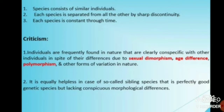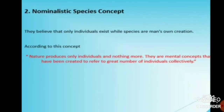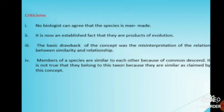The typological concept is equally helpless in the case of so-called sibling species — perfectly good genetic species but lacking conspicuous morphological differences. Nominalistic species concept: this concept holds that only individuals exist, while species are man's own creation. Nature produces only individuals and nothing more. Species are a mental concept created to refer to a large number of collected individuals. Criticism: no biologist can agree that species is man-made. It is now an established fact that they are products of evolution. The basic drawback of this concept was the misinterpretation of the relation between similarity and relationship. Members of a species are similar to each other because of common descent; it is not true that they belong to a taxon simply because they are similar.